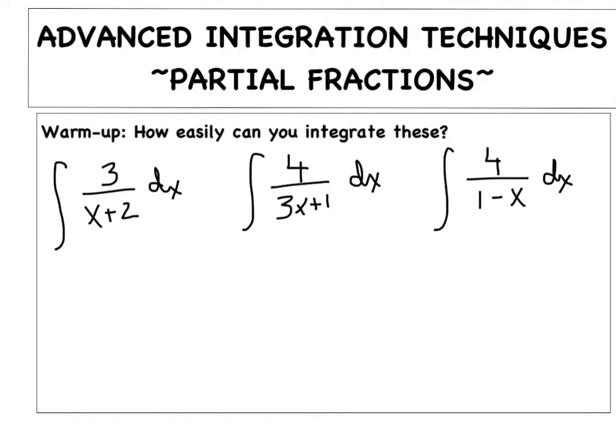The theme that you probably noticed on all three of these is they all fit into the pattern of du over u. On this first particular one, my u would be my denominator, and I got 3 times the natural log of the absolute value of x plus 2 plus c.